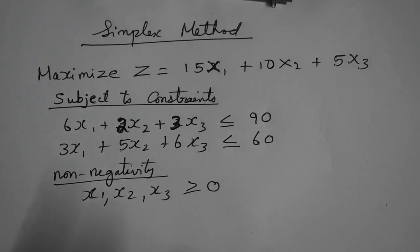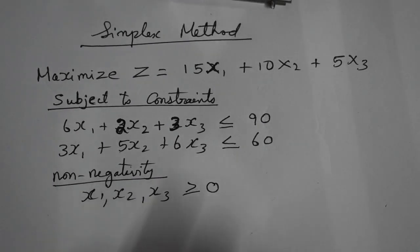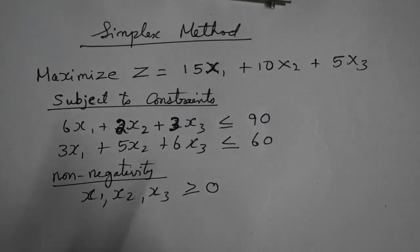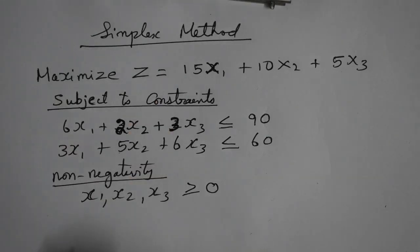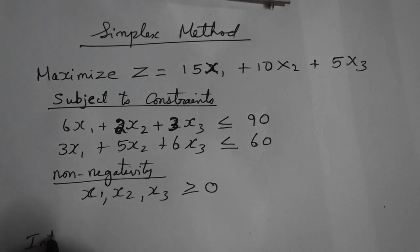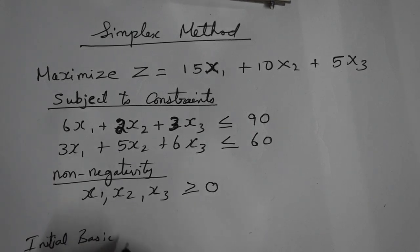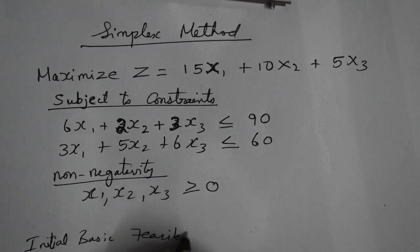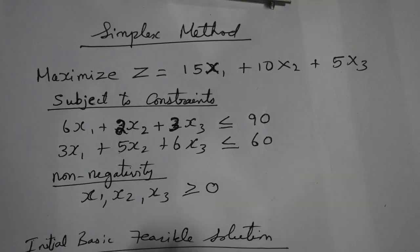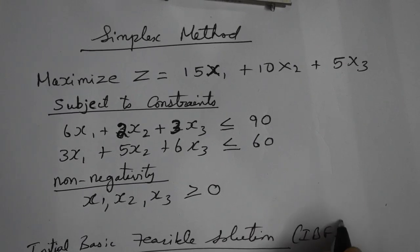This problem cannot be solved using the graphical method because there are three variables. In case you have three or any number of variables above two, you can choose the simplex method to solve it. The first step in the simplex method is called the Initial Basic Feasible Solution, or IBFS for short.